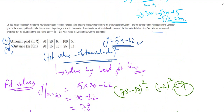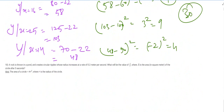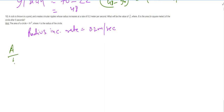The answer is 30. Now for the last question: a rock is thrown in a pond and creates circular ripples whose radius increases at a rate of 0.2 meters per second. What will be the value of A over pi, where A is the area in square meters, after five seconds?